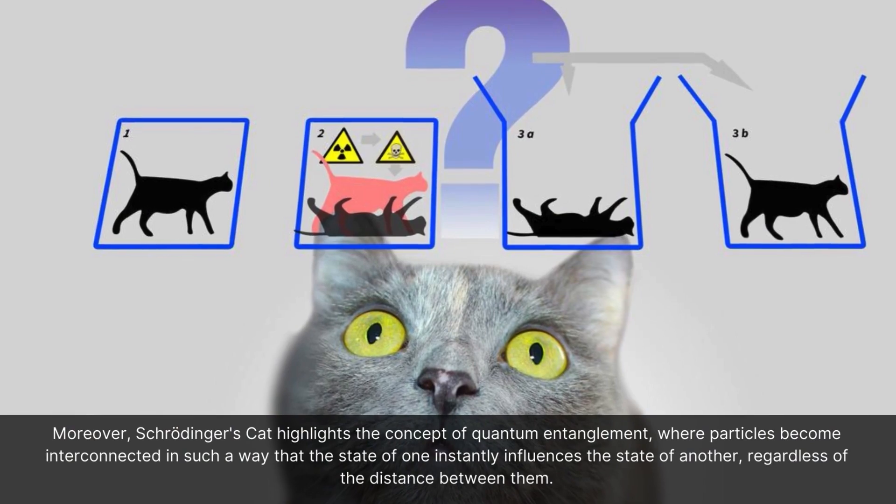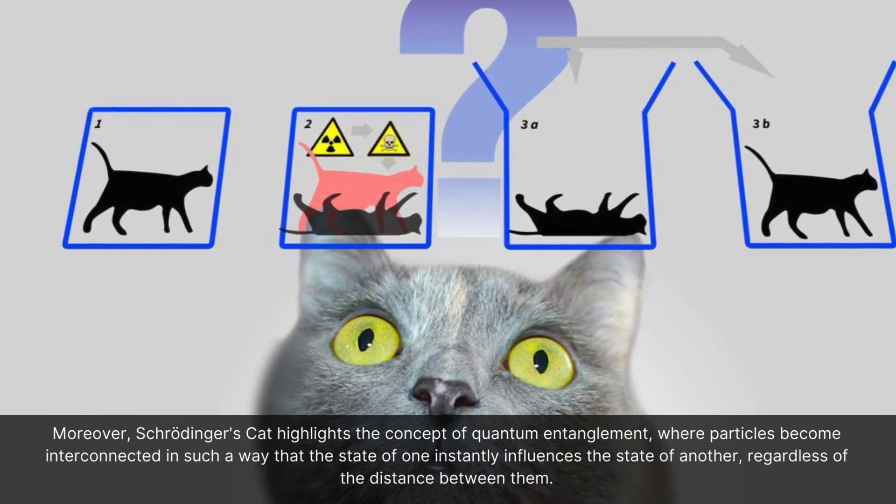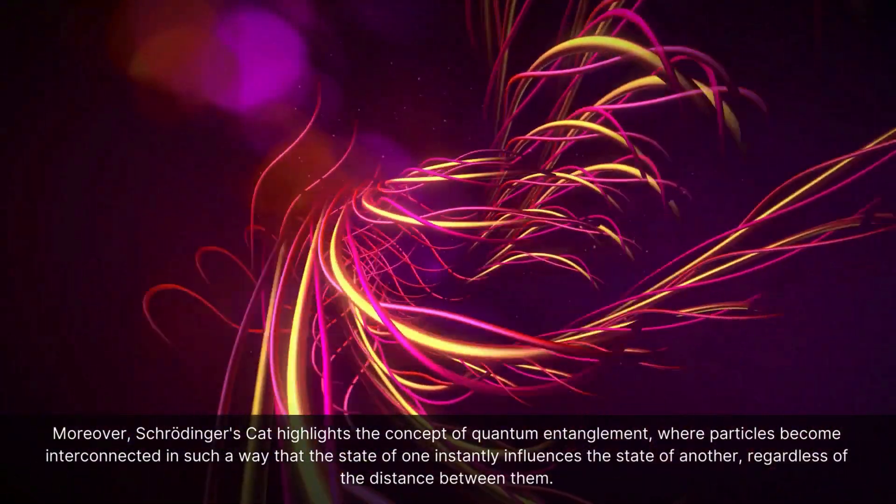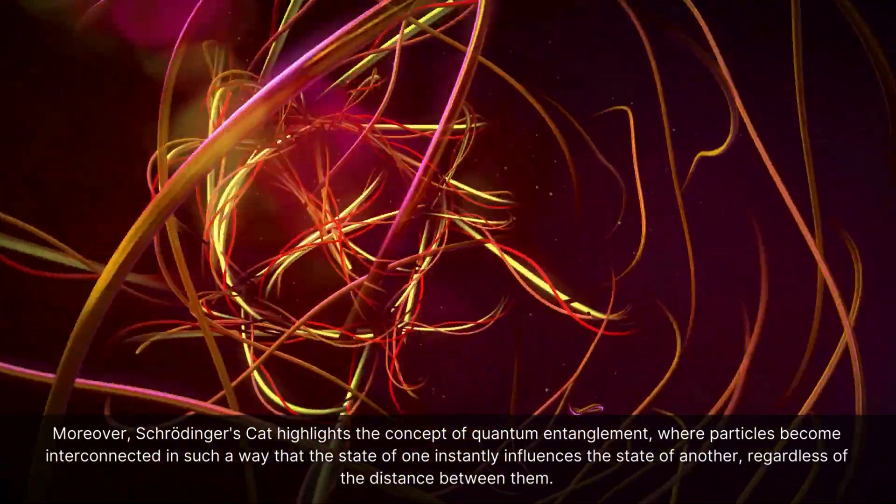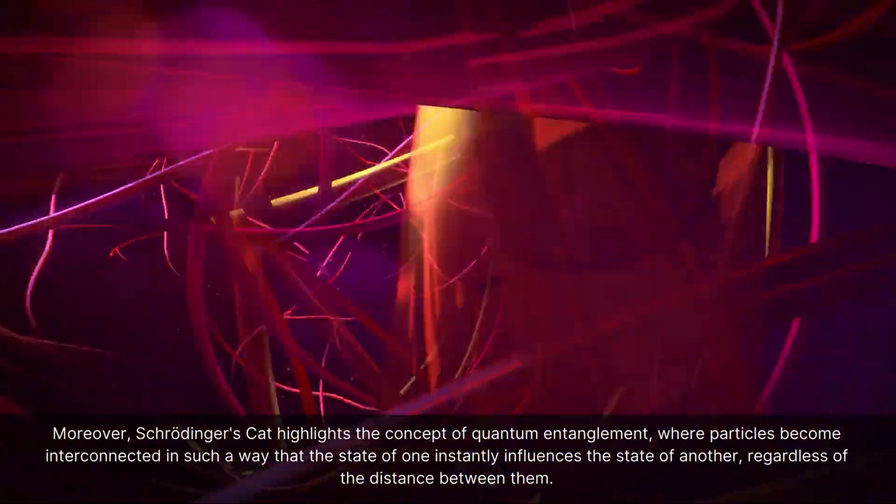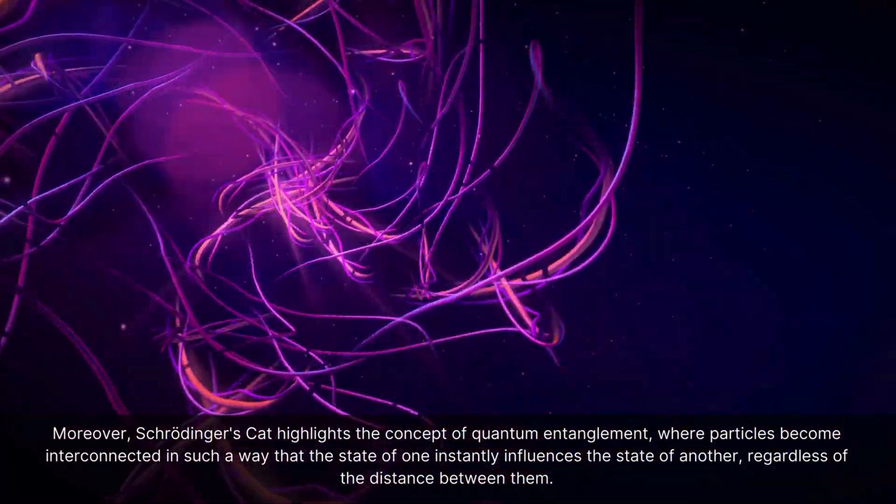Moreover, Schrödinger's cat highlights the concept of quantum entanglement, where particles become interconnected in such a way that the state of one instantly influences the state of another, regardless of the distance between them.